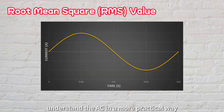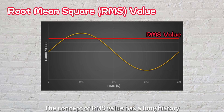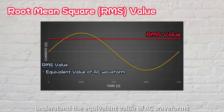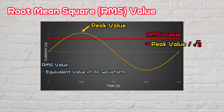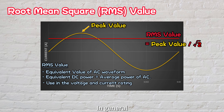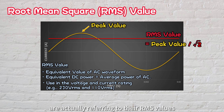To better understand AC in a more practical way, we can determine its RMS, or root mean square value. The concept of RMS value was developed to simplify and understand the equivalent value of AC waveforms. Using a scaling factor of the square root of 2, we can easily obtain the RMS value by dividing the peak value with this scaling factor. This RMS value represents the equivalent direct current that would dissipate the same amount of power as the average power dissipated by the alternating current. In general, the RMS value is commonly used as the voltage and current rating. For instance, the voltage levels in different countries, such as 230 volts and 110 volts, are actually referring to their RMS values.